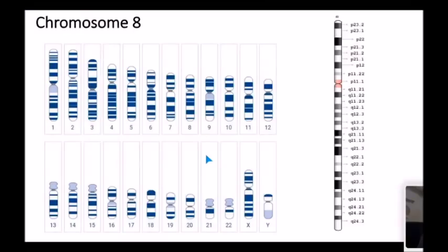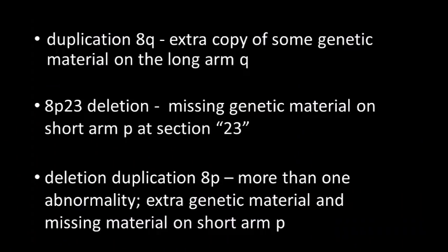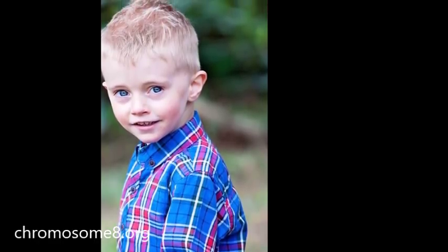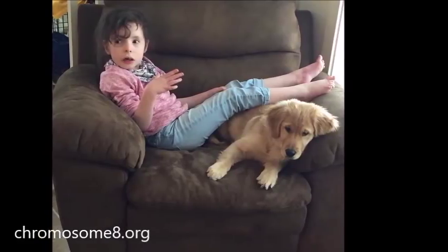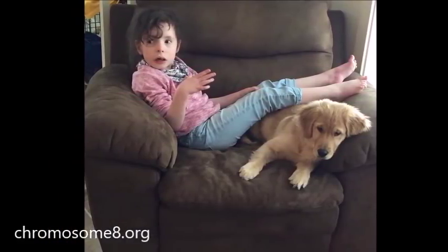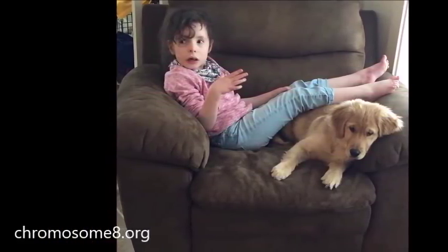If you hear about a condition called 8p23 deletion, that means on chromosome 8, the short arm P is missing part of the chromosome at the section called 23. You may hear something like deletion-duplication 8p, which means there's more than one abnormality on the chromosome, both a deletion and a duplication. Sometimes the condition is inherited from the parents, who also share the abnormality, or sometimes it happens by chance and it's not inherited. This is called de novo.